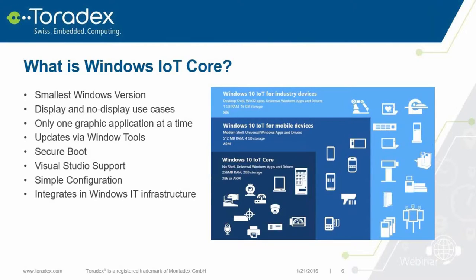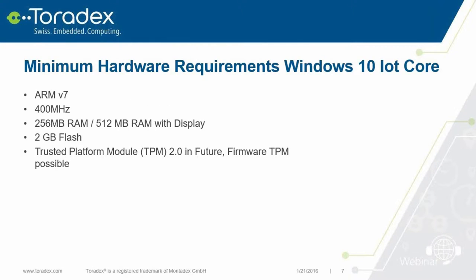The minimum hardware requirement is ARMv7 — so Cortex-A9 or Cortex-A15 and newer ARM chips — at 400 MHz, 256 MB of RAM for headless or 512 MB if you need display, and 2 GB of flash memory. In the future it will need a Trusted Platform Module, which allows you to lock down and have a trusted boot so you know nobody has tampered with your system. Firmware TPMs are also possible, so you can directly use features of the SOC without needing external hardware.